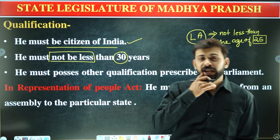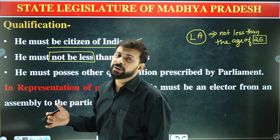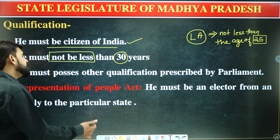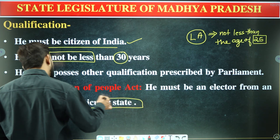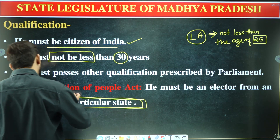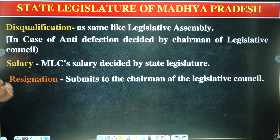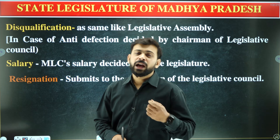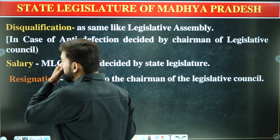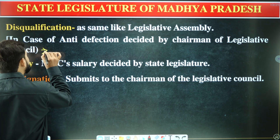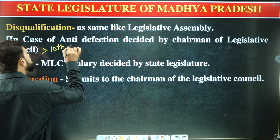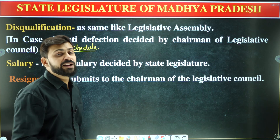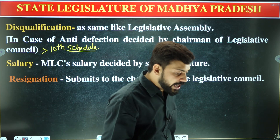Additionally, all qualifications prescribed by Parliament must be met. Your name as an elector must be registered in that particular state. Regarding disqualification, the same disqualifications apply — including under the anti-defection law (10th Schedule). The Chairman decides on disqualification cases under the anti-defection law.